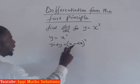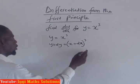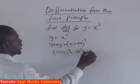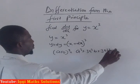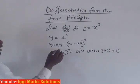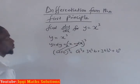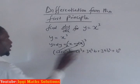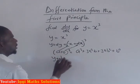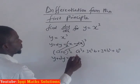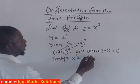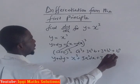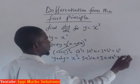We have a function of x plus dx, all cubed. Expanding using the binomial formula: x cubed plus 3ab plus 3ab squared plus b cubed — where a is x and b is dx. So we rewrite: y plus dy is equal to x cubed plus 3x squared dx plus 3x dx squared plus dx cubed.